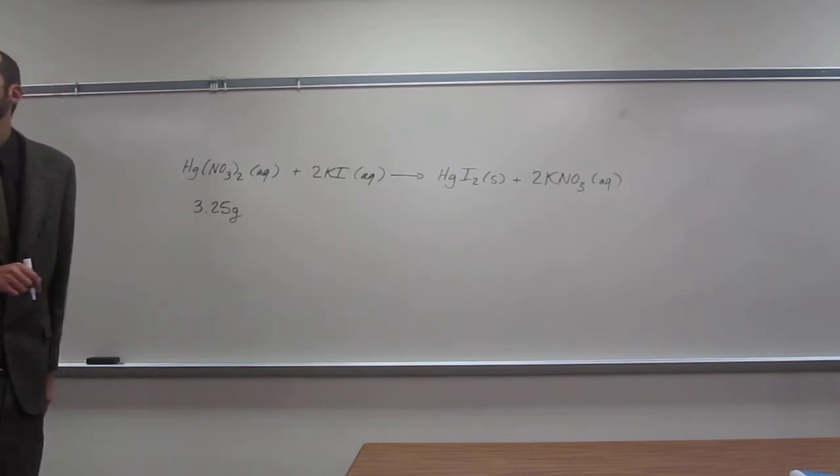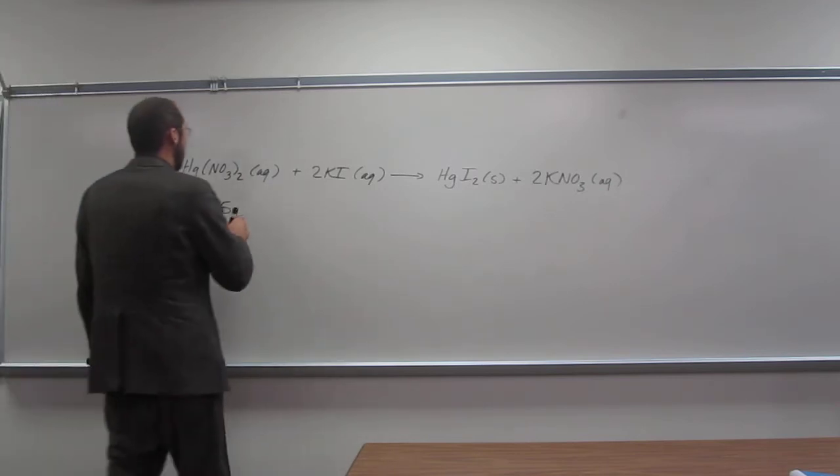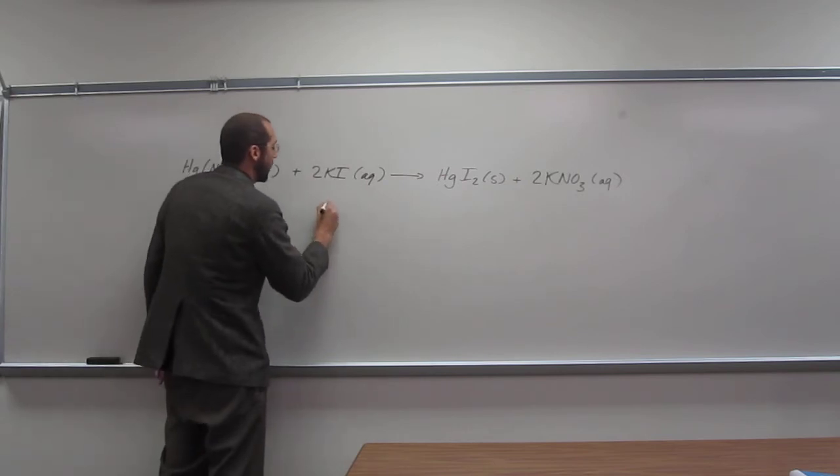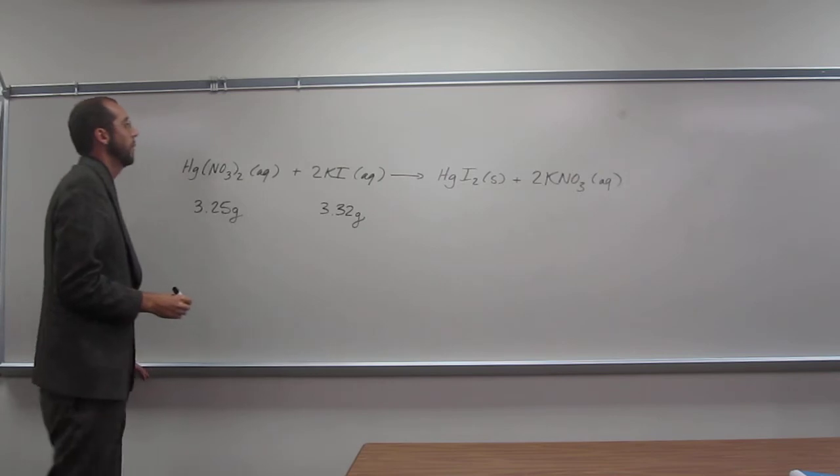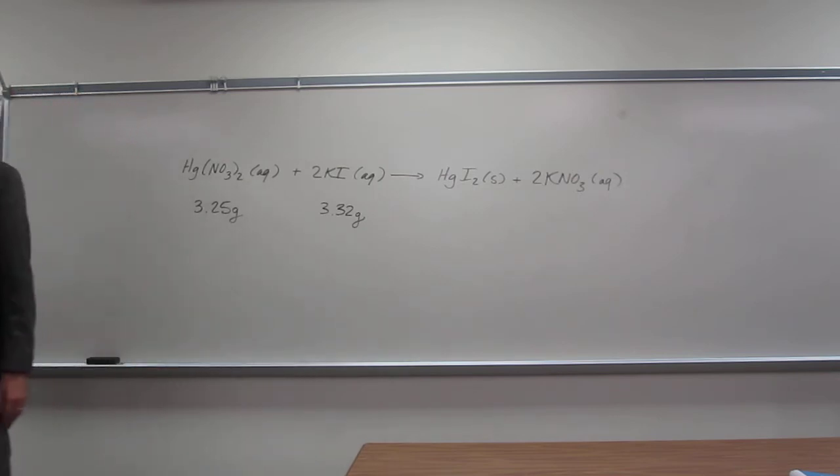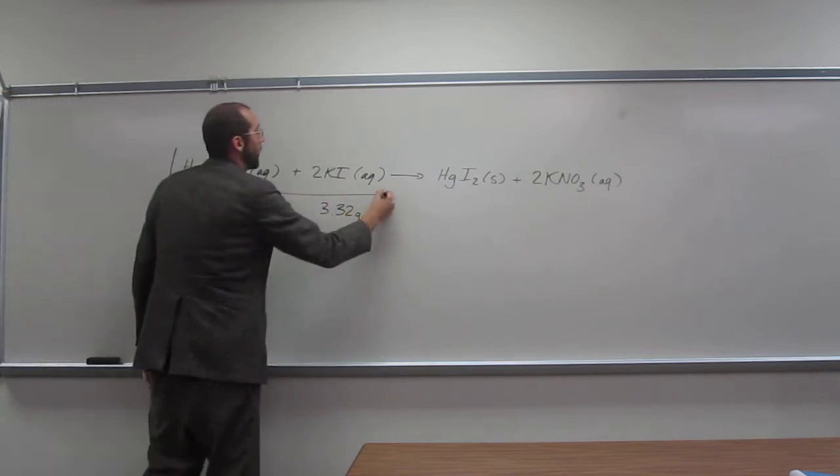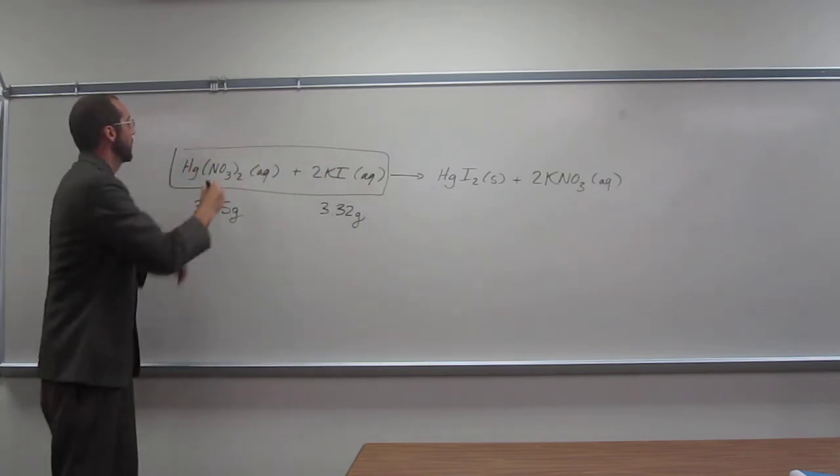what is the total mass of the reactants? So remember, what are the reactants in this chemical equation? The ones on the left side, so all we have to do is add these two together. Those are the reactants.